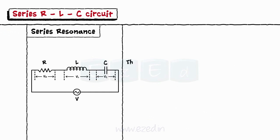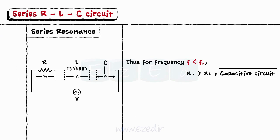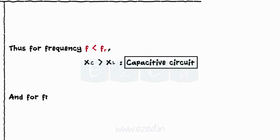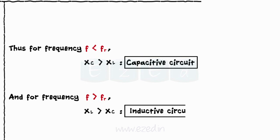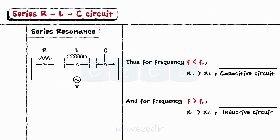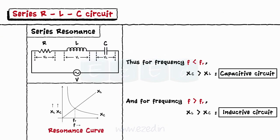For frequencies less than the resonant frequency, the circuit behaves as a capacitive circuit. For frequencies above the resonant frequency, the circuit behaves as an inductive circuit. Thus we get the following resonance curve.